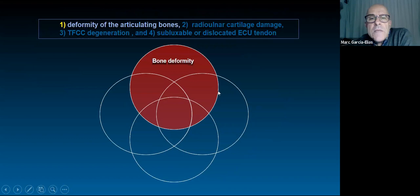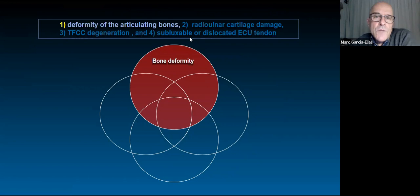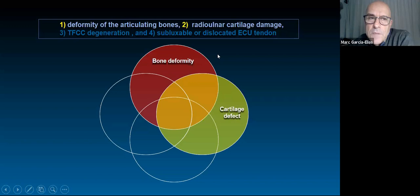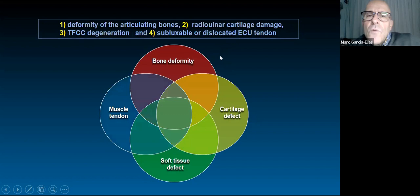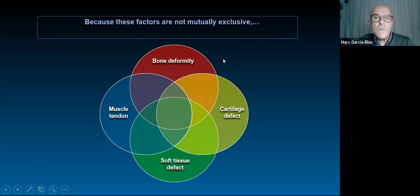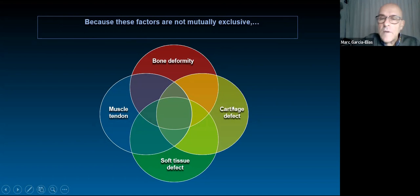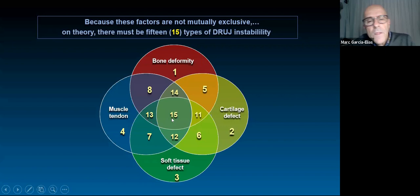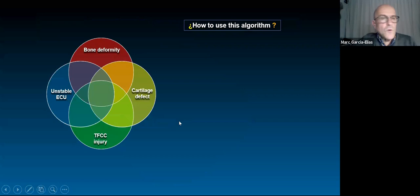The algorithm considers four important factors: first, deformity of the articulating bones; second, radio-ulnar cartilage damage; third, TFCC degeneration or tear; and fourth, subluxability or dislocability of the ECU tendon. These are mutually non-exclusive factors — you may have a bone deformity with a cartilage defect, a soft tissue defect combined with bone deformity, and so on. All combinations give at least 15 different types of DRUJ pathology.